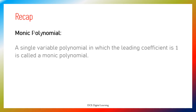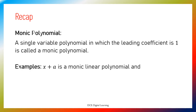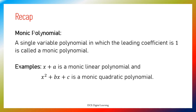Recap. Definition of Monic Polynomial: a single variable polynomial in which the leading coefficient is 1 is called a monic polynomial. For example, x plus a is a monic linear polynomial and x squared plus bx plus c is a monic quadratic polynomial.